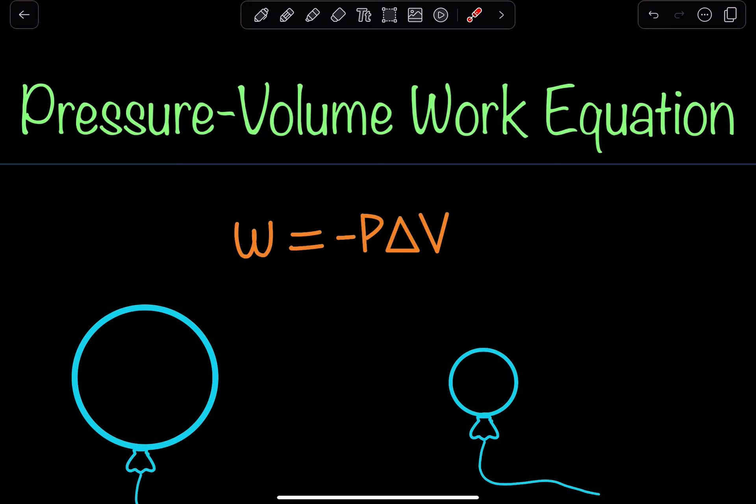Within thermochemistry, there is this relationship between pressure, volume, and work. And it's defined by this equation where work is equal to negative pressure times the change in volume.